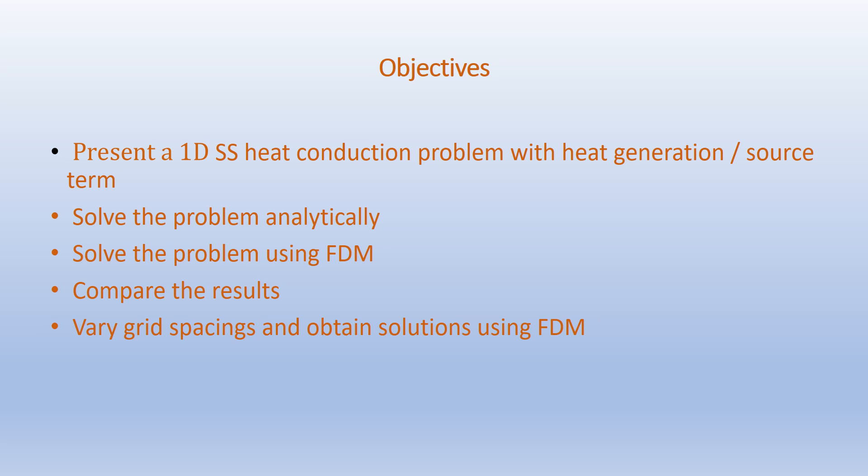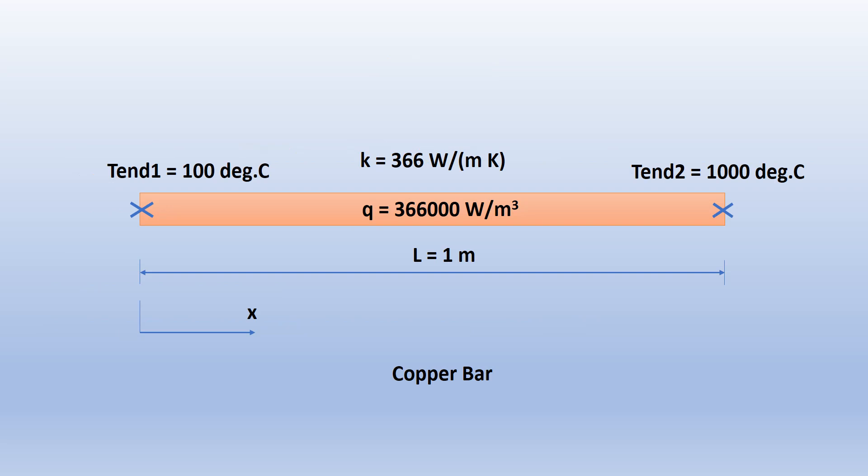Let us consider a copper bar which is 1 meter long. One end of the bar is maintained at 100 degrees Celsius and the other end is maintained at 1000 degrees Celsius. The thermal conductivity of the bar K is given as 366 watts per meter Kelvin. The heat generation per unit volume Q is given as 366,000 watts per meter cube.